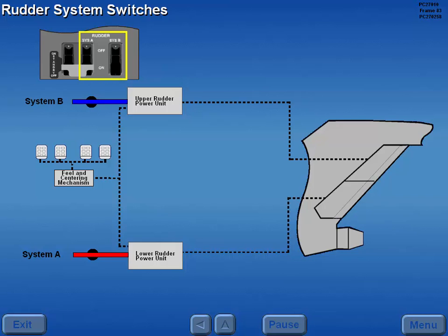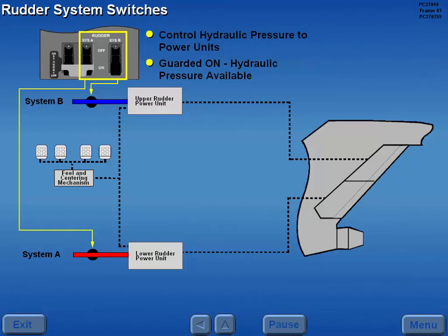The rudder system switches control hydraulic pressure to the upper and lower power units. With the switches in the guarded on position, hydraulic pressure is available.